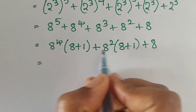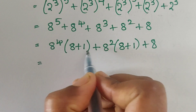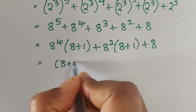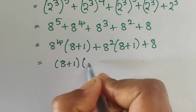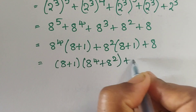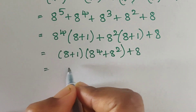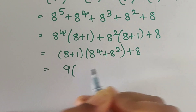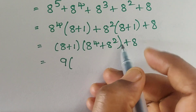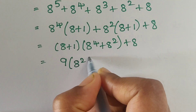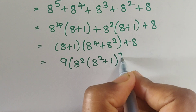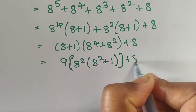Now in these two terms we have (8 plus 1) as common, so we take out (8 plus 1) as common. This gives us (8 plus 1) times (8 power 4 plus 8 power 2 plus 8). Now 8 plus 1 equals 9. In the bracket, 8 power 2 is common, so we take out 8 power 2, leaving 8 squared plus 1, close bracket, plus 8.